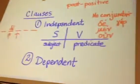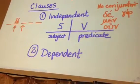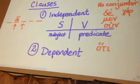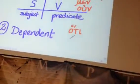Dependent clauses tend to have a conjunction right at the beginning of the clause, and the two that we'll see most often will be hati and hina.